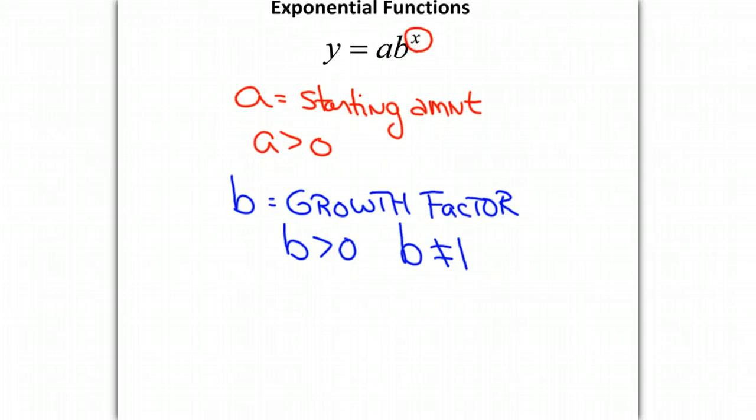So if b is a number greater than 0 and not equal to 1, then one of two things can happen. B can be bigger than 0 but smaller than 1, or b can be greater than 1. These are the two differences in our exponential function.